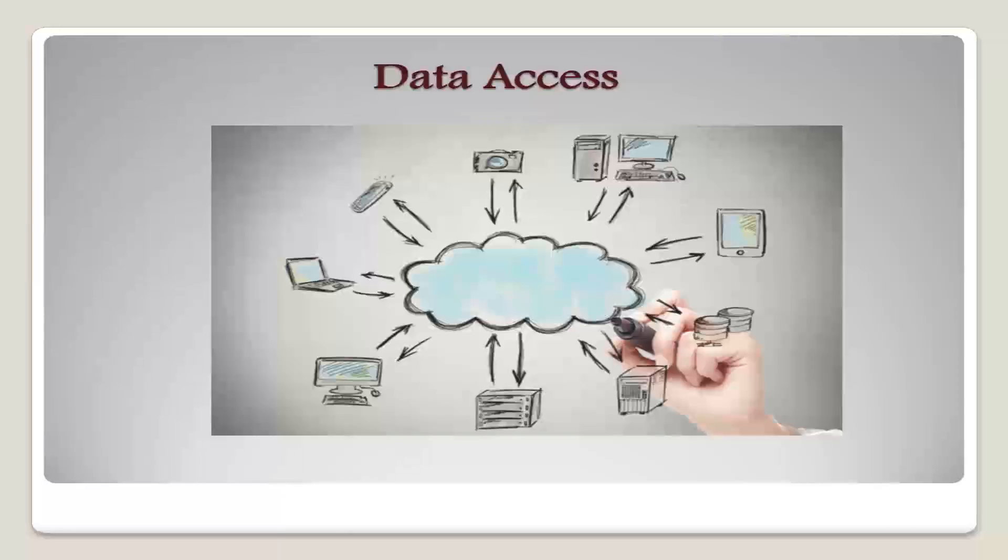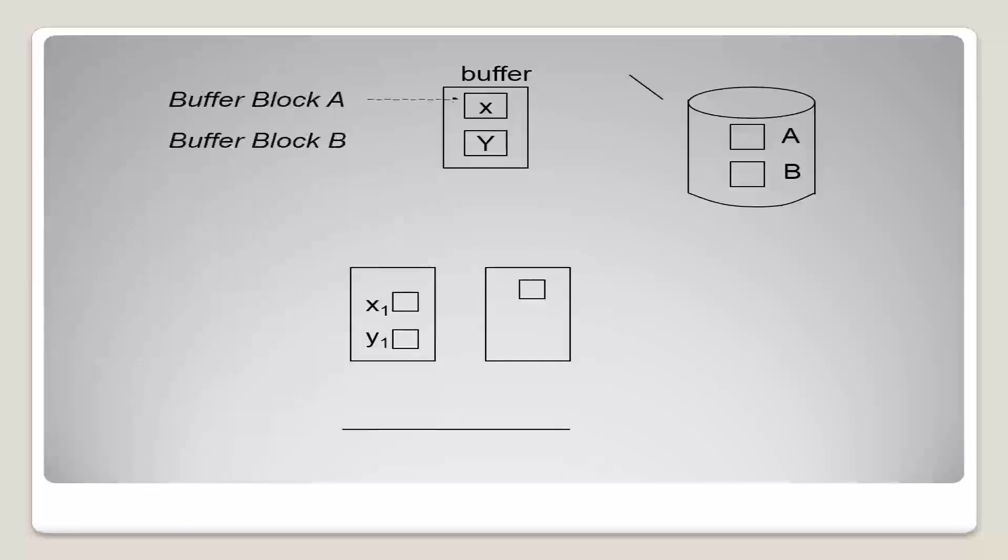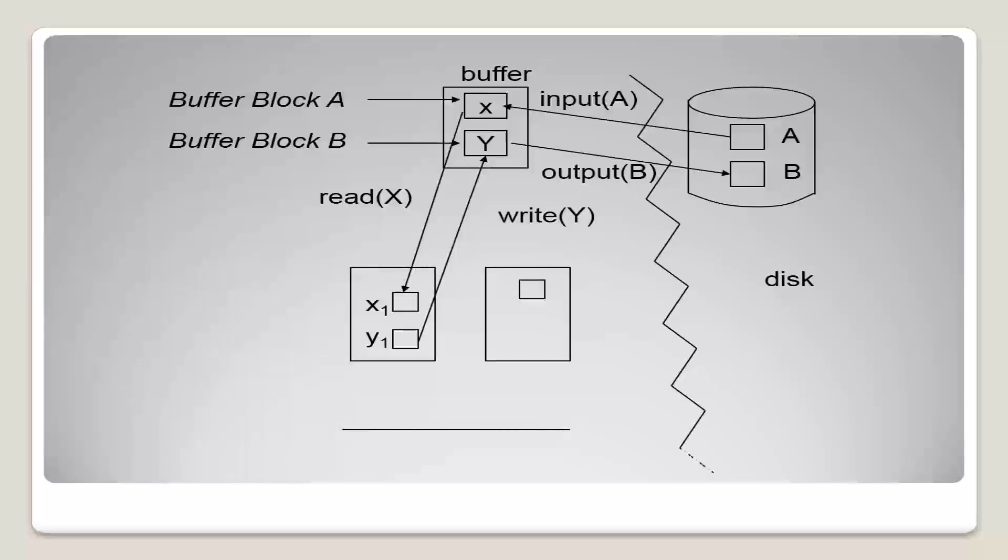Each transaction Ti has a local copy of its private work area in which local copies of all the data items accessed and updated by it are kept. Ti's local copy of a data item X is called Xi. We assume for simplicity that each data item fits in and is stored inside a single block.